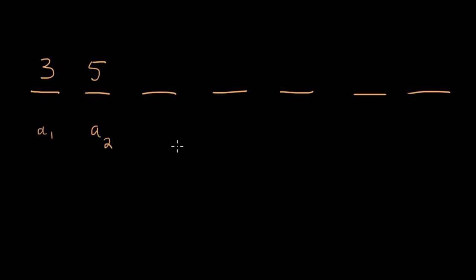And they tell us that every term in the sequence after a2, so the third term, the fourth term, everything after a2, a3 and above, is the product of all the terms in the sequence preceding it. So this term is going to be the product of everything before it. This term, a4, the fourth term, is going to be the product of all three of the terms before it.